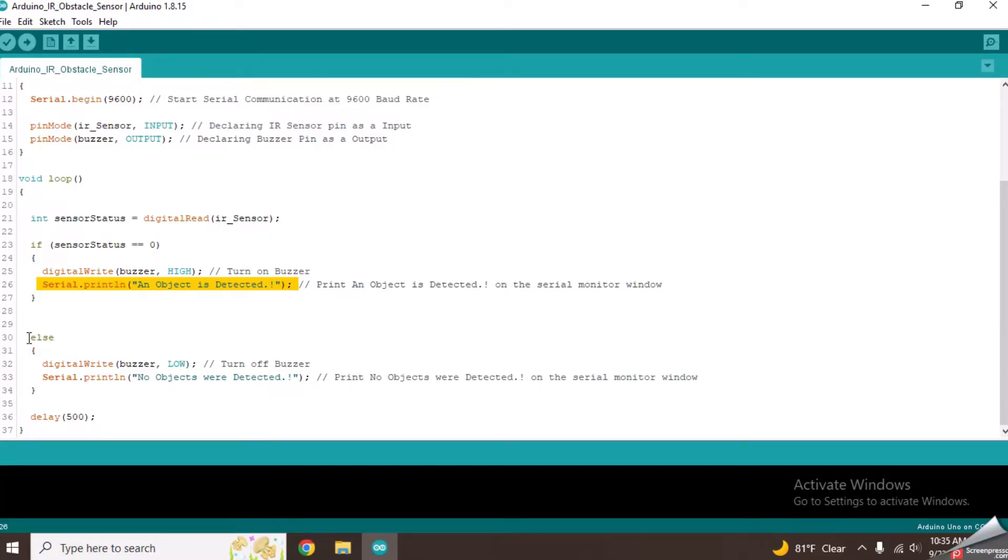If sensorStatus is 1, it will execute this else part. This will turn off the buzzer while printing no objects were detected message on serial monitor. This line will put a delay of 500ms before going to the next cycle.